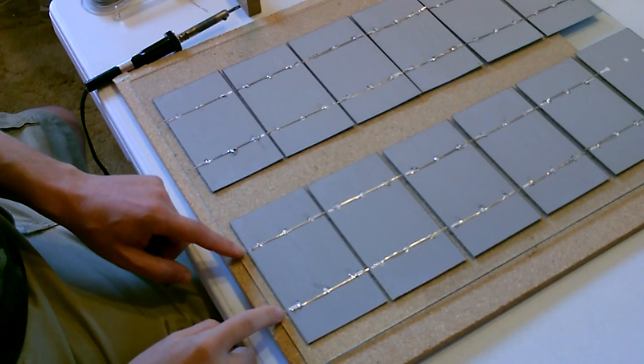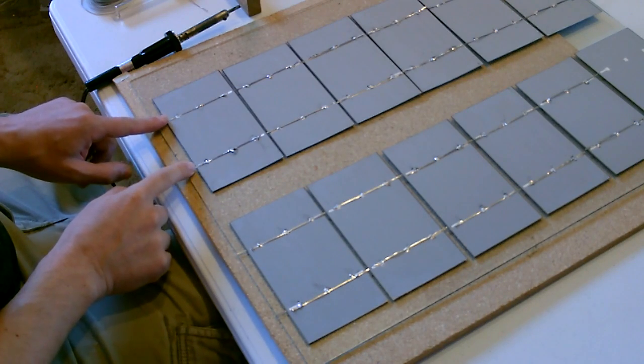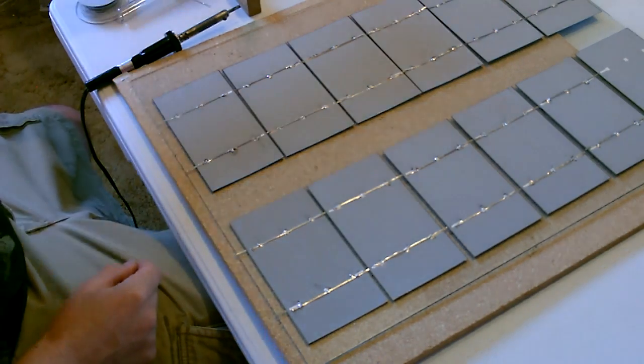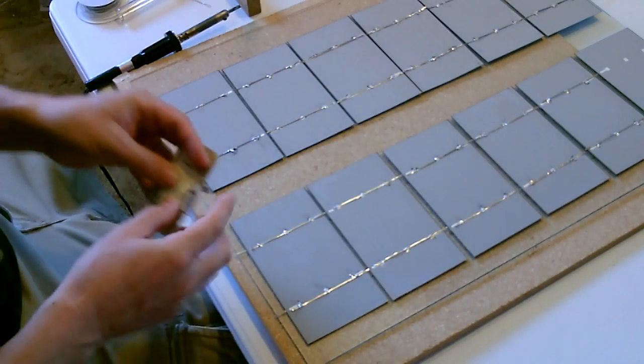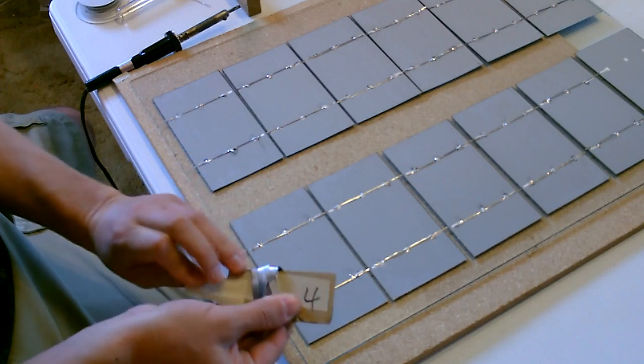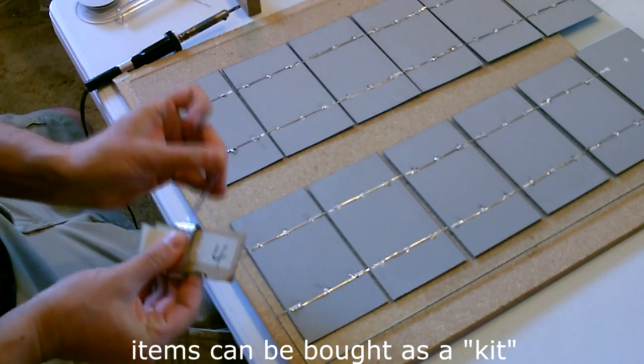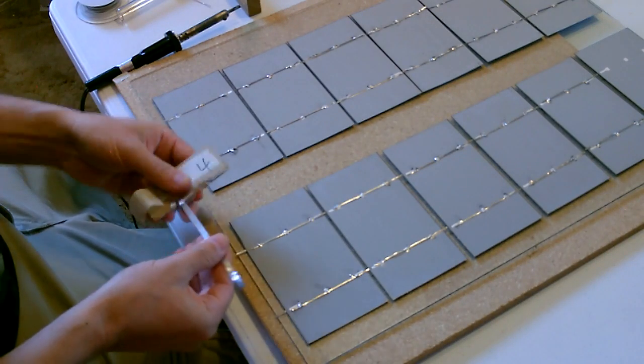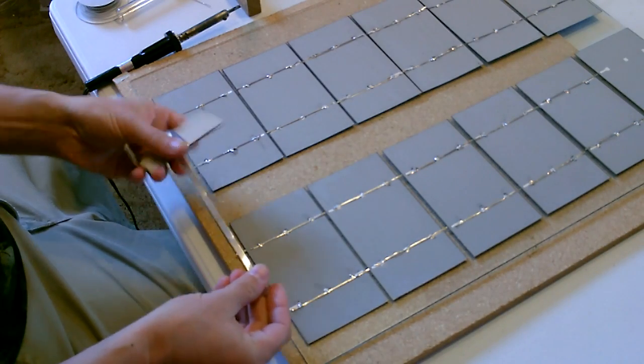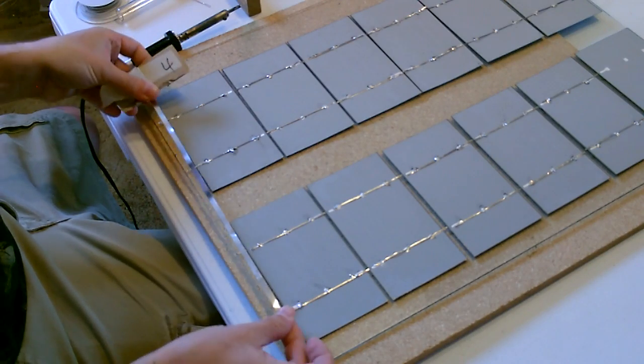Okay, so I cut those ends down. So these are the negative from this panel. This is the positive from this panel. And all you have to do is take this bus wire which is just a fat piece of the same type of wire, flatten it out, and we're going to solder it straight across like that.